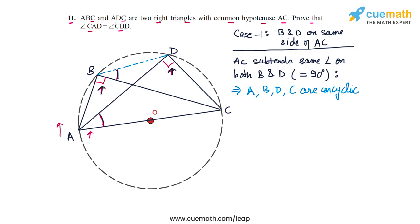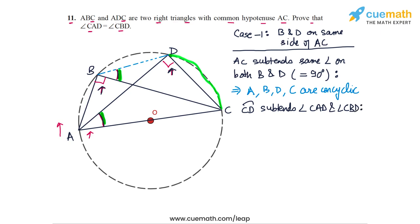Observing the angles at A and B: angles CAD and CBD are both subtended by the same arc CD at the circumference. Since they are subtended by the same arc, angle CAD equals angle CBD. This proves Case 1, when B and D are on the same side of AC.